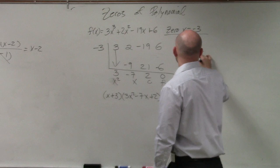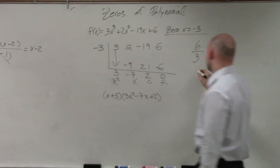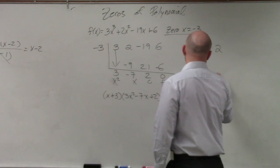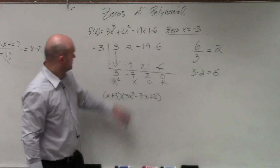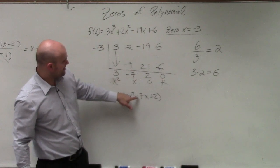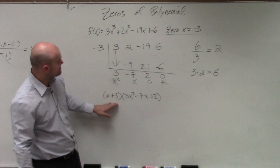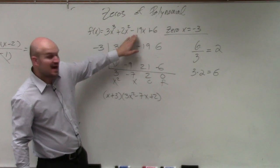This times this gives me my original answer. Again, I'll revert that to what we did last class period. 3 divides into 6 2 times. That means 3 times 2 equals 6. This divides into this 3x squared minus 7x plus 2 times. So 3x squared minus 7x plus 2 times x plus 3 is going to give me that.